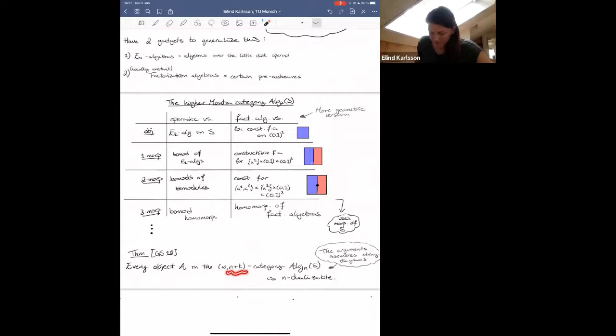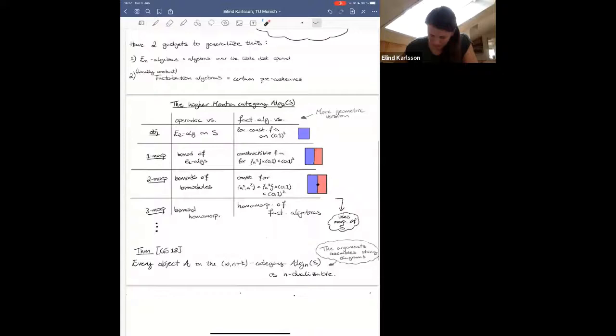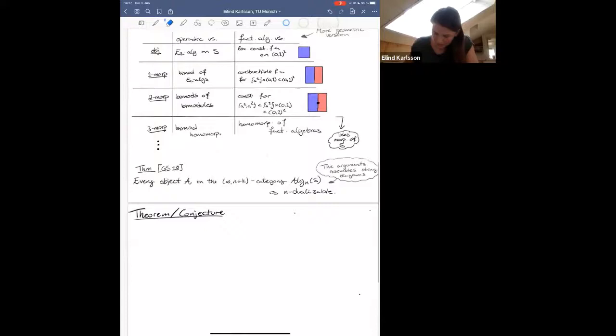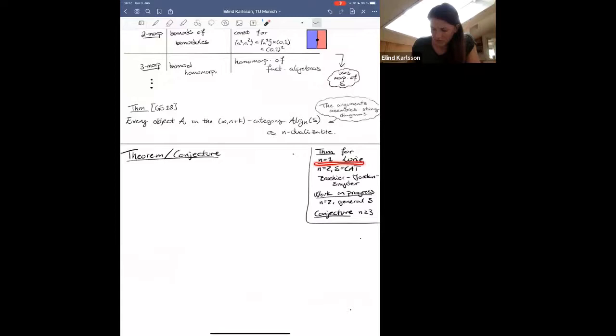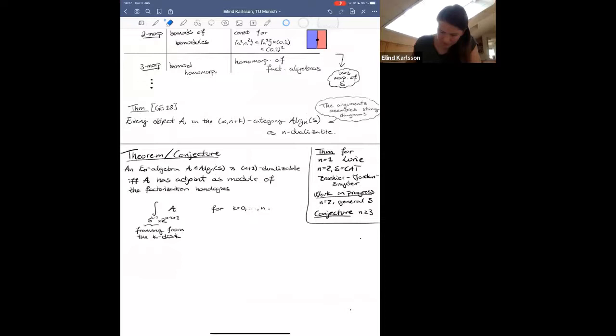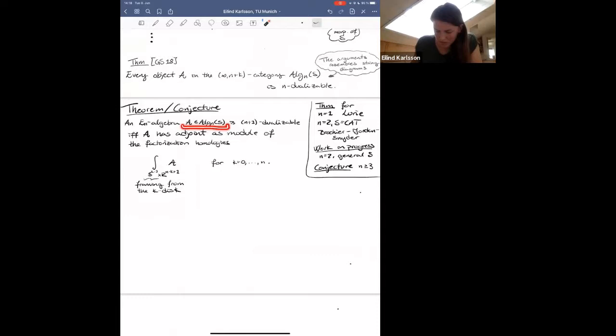And for me, my motivation is to define TFTs, then there is the obvious question, what conditions are necessary to have higher dualizability than n. So this is exactly what I am working on currently. So this is a theorem slash conjecture, and I'm just going to state. So it's a theorem for n equals one by Lurie, it's a theorem for n equals two and the category of categories by Boucher, Jordan and Snyder, and then I'm working on general S. And then I should still state it as conjecture for higher n. So it was conjecture by Lurie. And it says the following.